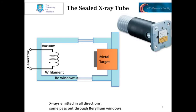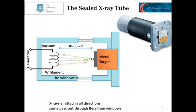Here we see a schematic and a photo of a sealed X-ray tube — the most common source of X-rays in labs around the world. In the top right, we see a picture of a ceramic sealed X-ray tube. Traditionally, the bottom part — the white section — would have been glass, but in recent years it has been replaced by a ceramic piece, making these tubes more reliable. On the left-hand side of the schematic, we have a tungsten filament, which generates an electron beam accelerated towards the metal target using a high potential of 30,000 to 60,000 volts. The electrons impact onto atoms in the metal target, causing the generation of X-rays, which are emitted in all directions, some of which pass out through beryllium windows.